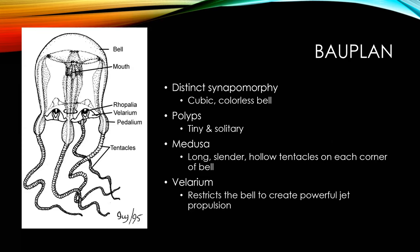In the cubozoan body plan, there is a distinct synapomorphy: a cubic, colorless bell. Polyps are tiny and solitary. During the medusa stage, there are long, slender, hollow tentacles on each corner of the bell, and the velarium restricts the bell opening to create a powerful jet propulsion.